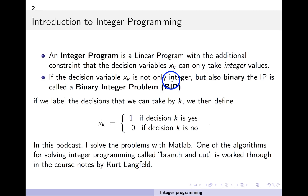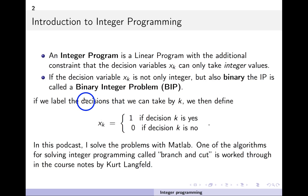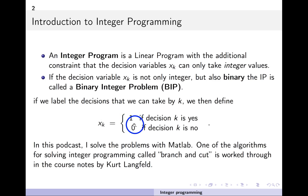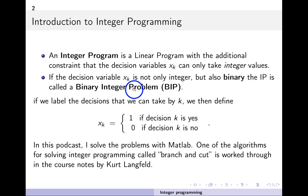In that case, the problem is called a binary integer problem. What we mean by that is if we're trying to decide on something and the decision is yes, the variable is one; if the decision is no, the variable is zero. That's what a binary integer program is.